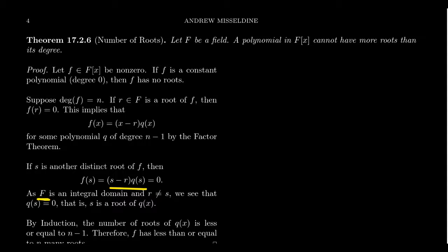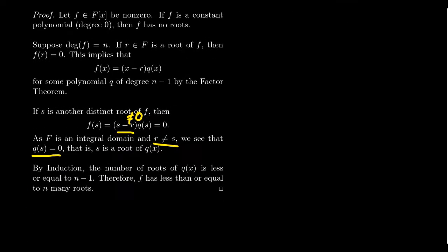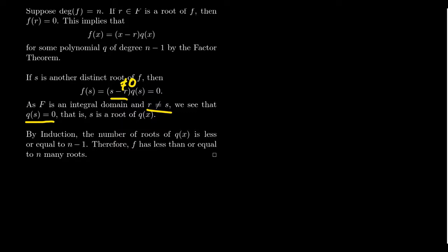Since F is an integral domain, that means F[x] is also an integral domain. So the only way a product of two quantities can be 0 is if one of the factors is 0. Could it be the first factor? Well, r is not equal to s, which means s minus r is not equal to 0. So the fact that F[x] is a domain would then force it so that q(s) equals 0.